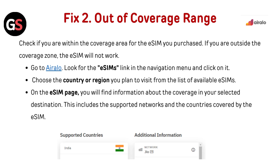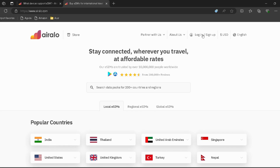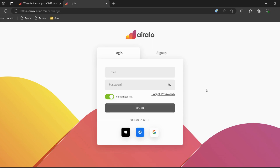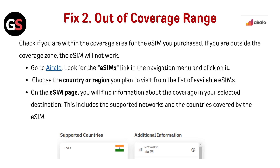Fix 2: Out-of-coverage range. Check if you are within the coverage area for the eSIM you purchased. If you are outside the coverage zone, the eSIM will not work. Go to earlobe — the link is provided in the description. Look for the eSIM's link in the navigation menu and click on it. Choose the country or region you plan to visit from the list of available eSIMs. On the eSIM page, you will find information about the coverage in your selected destination.